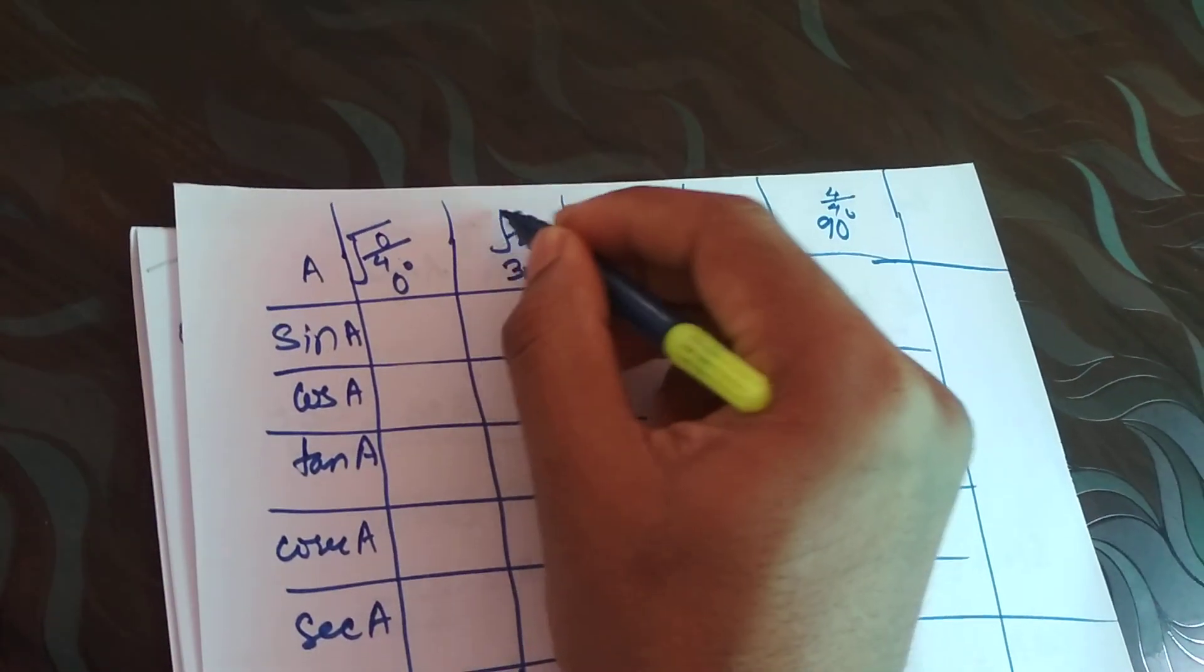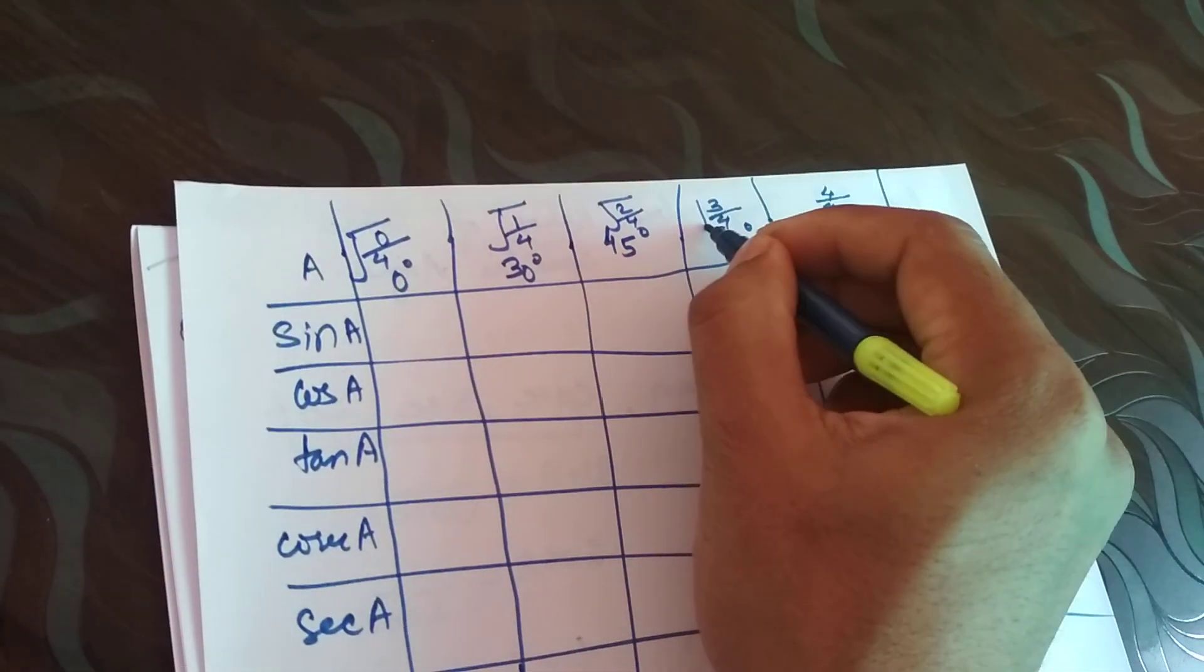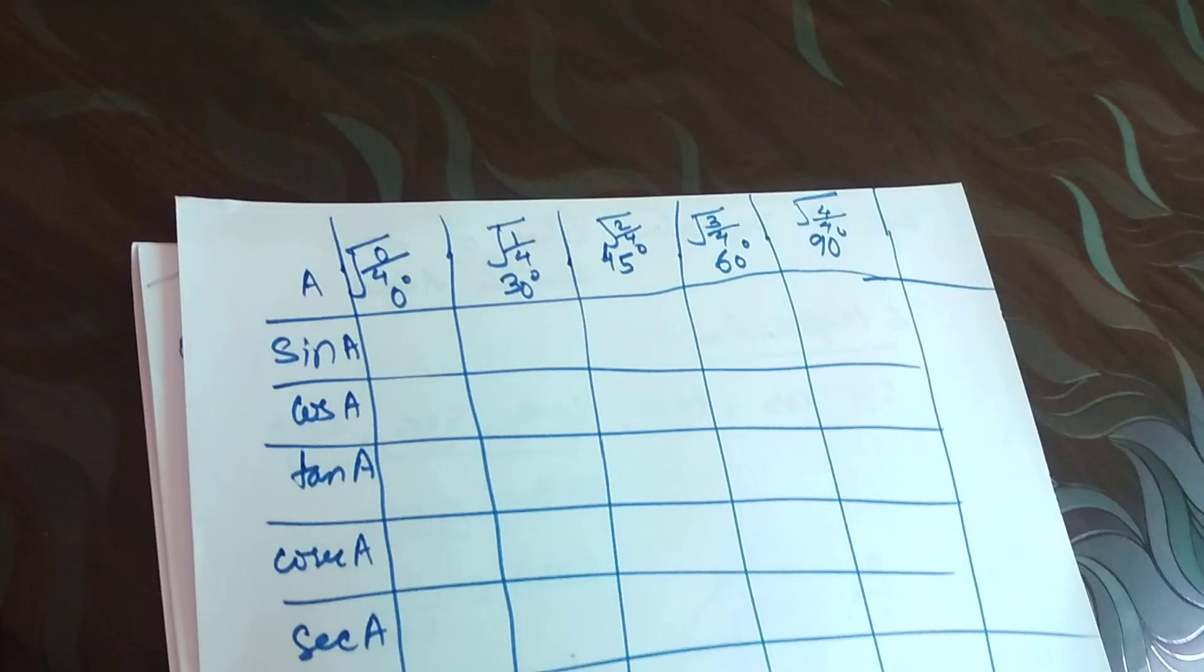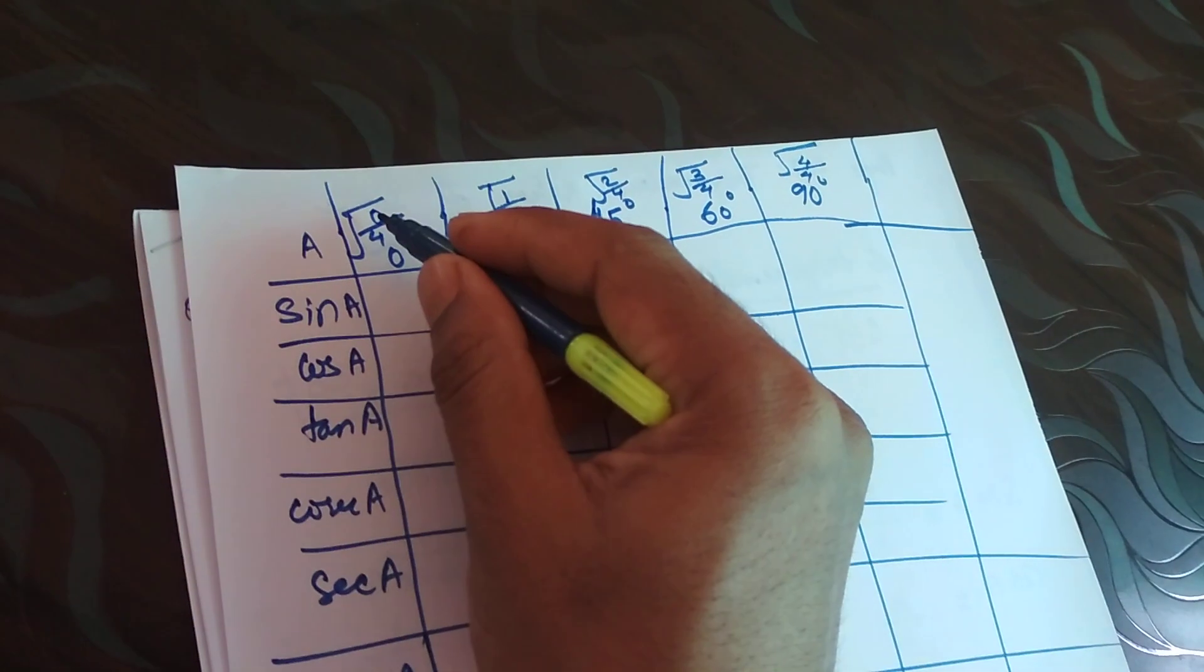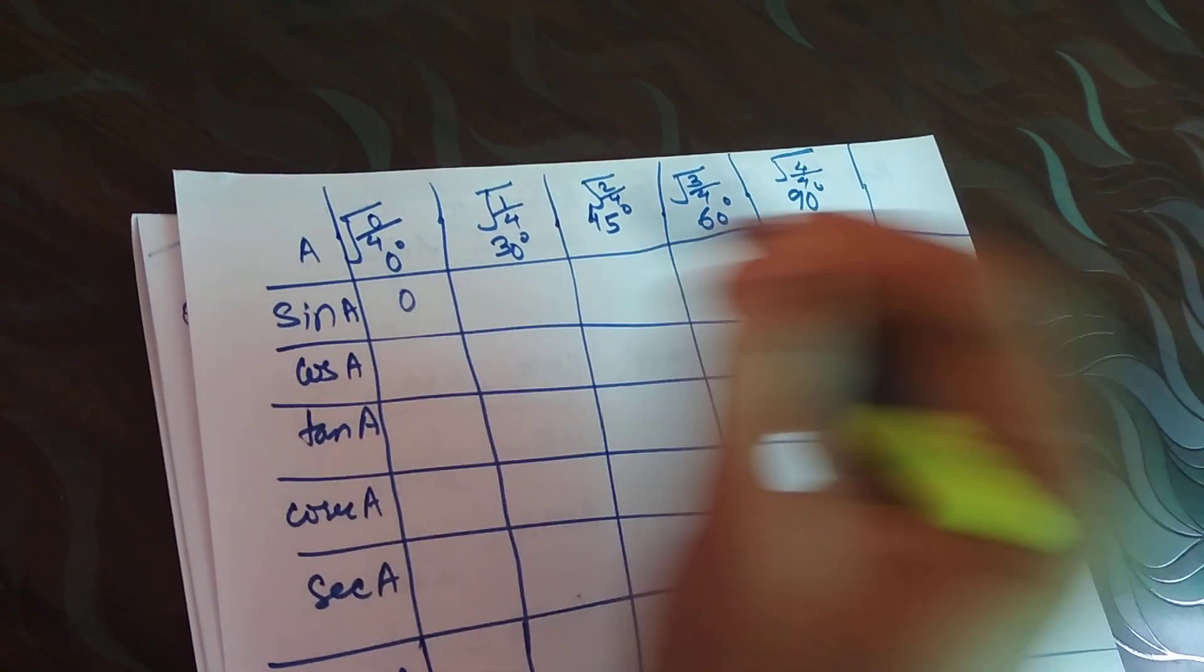So once we have done, now we will take the square root. What is the square root of 0? We will take it as 0.